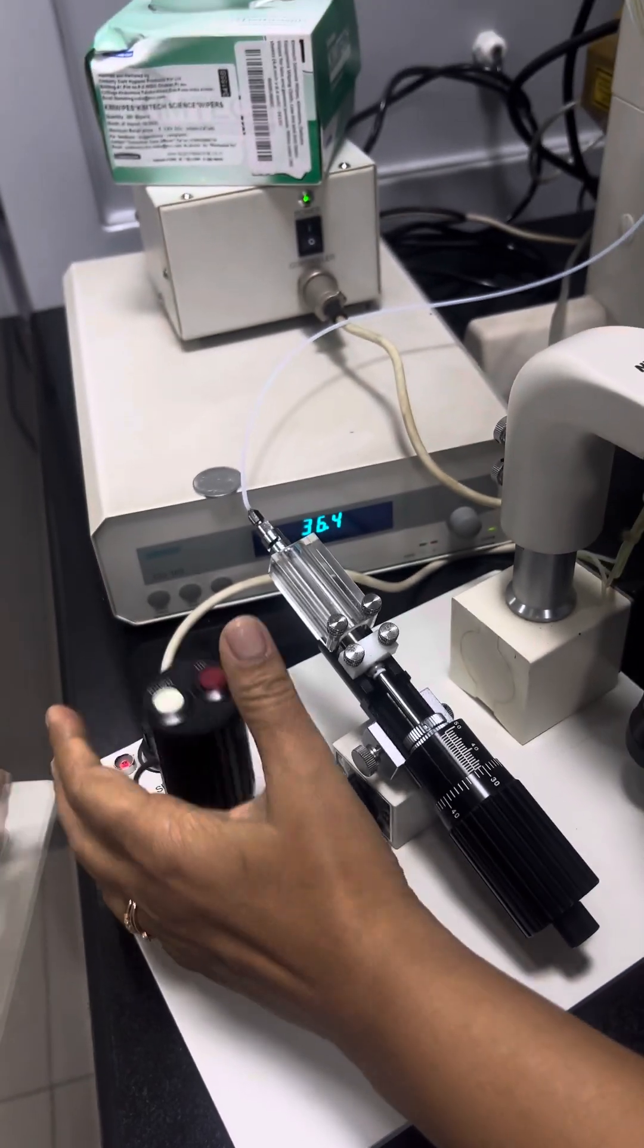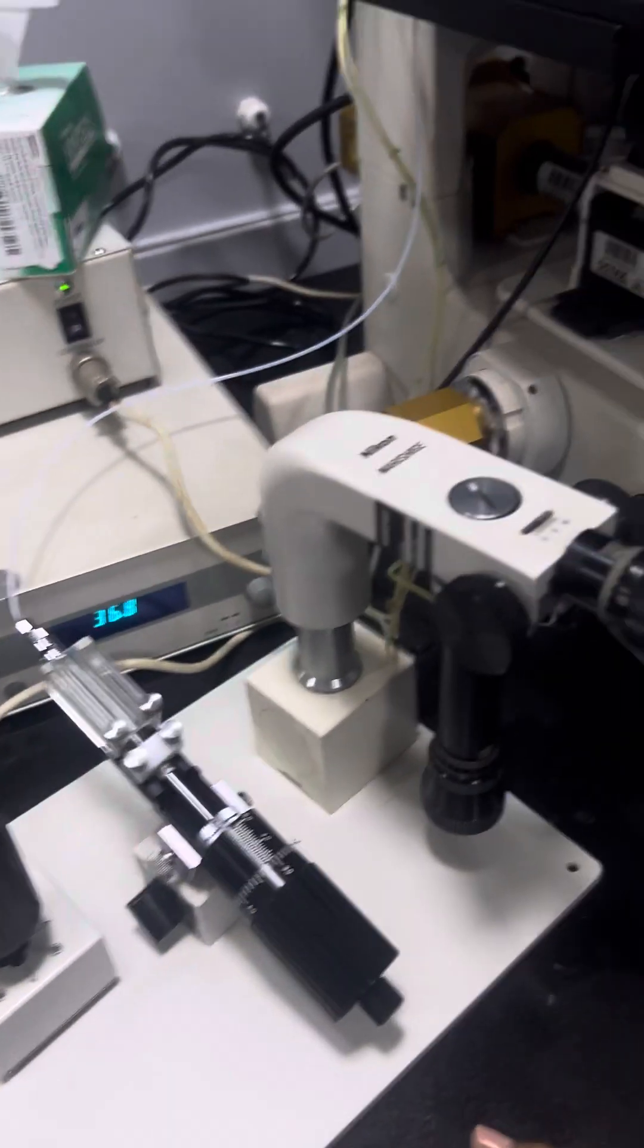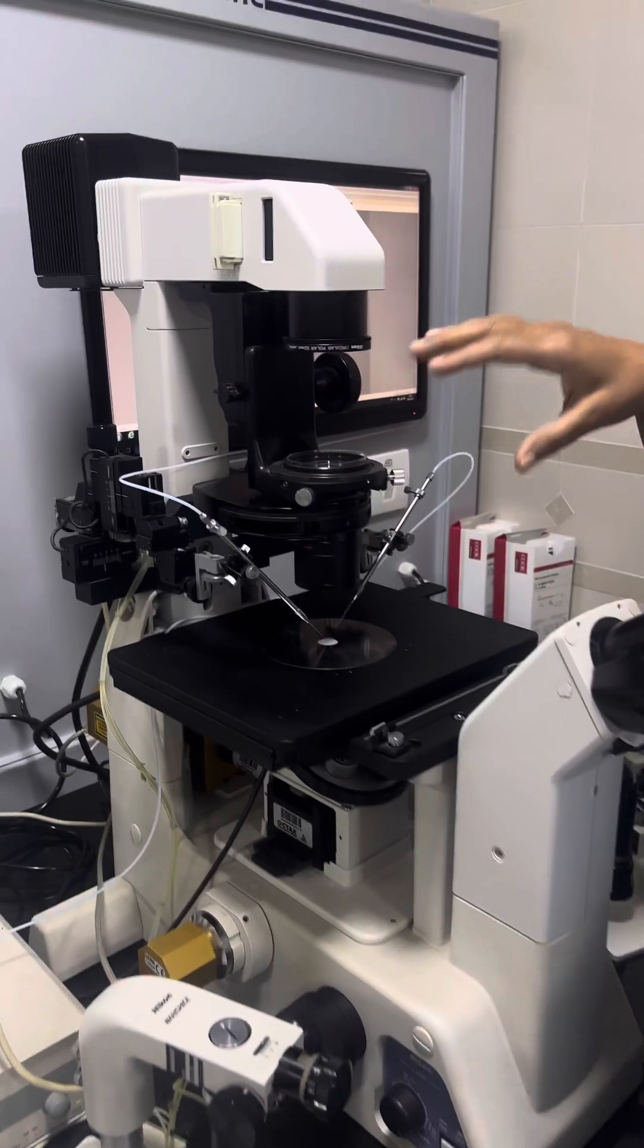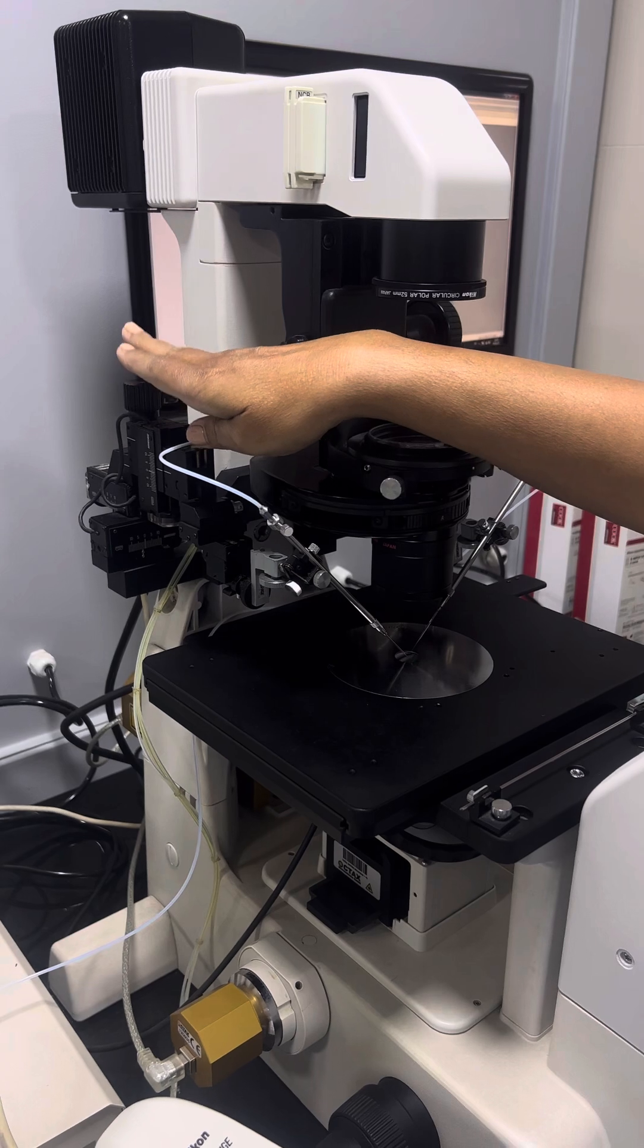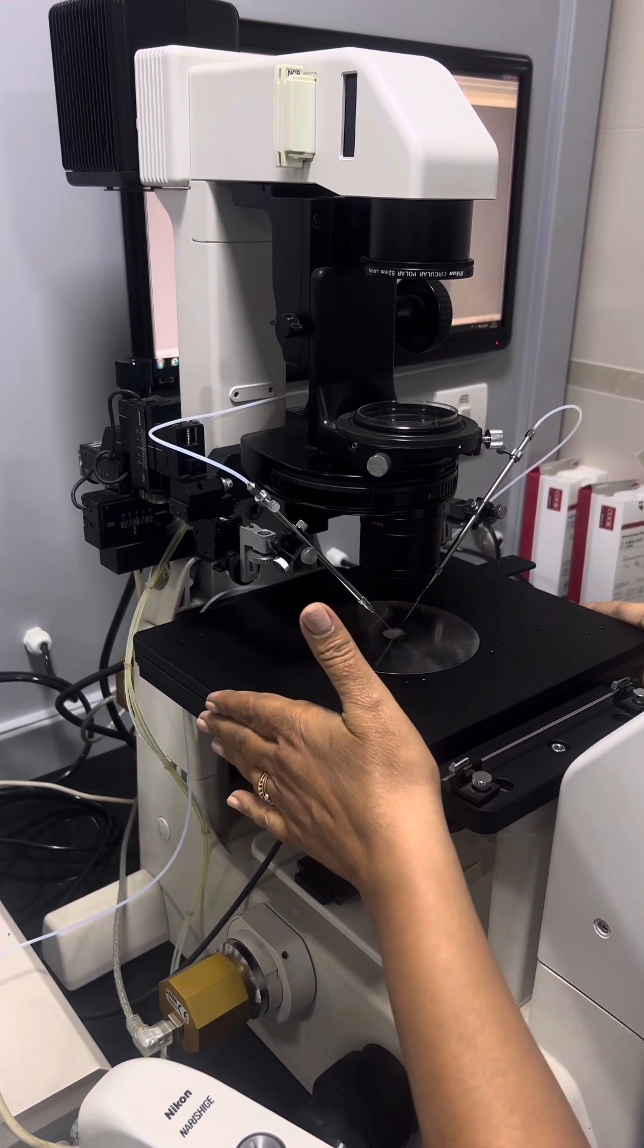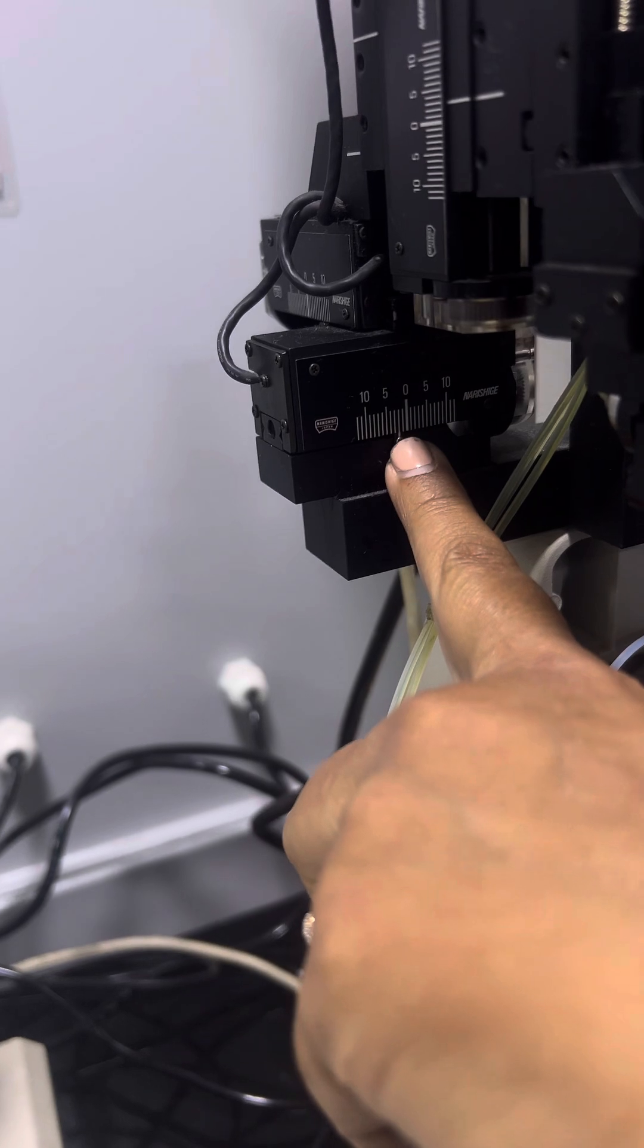This has a motor and up and down switch. And then you have to make sure that all the X, Y and Z axis on the microscope table also is on 0. It should be on 0.